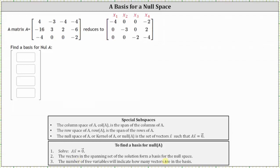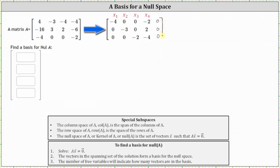Notice here we are given only matrix A in row echelon form. Since they weren't the augmented matrix for the equation A times vector x equals a zero vector, we would have to include a fifth column of zeros. So if we include a fifth column of zeros, we now have the augmented matrix for the vector equation in row echelon form.